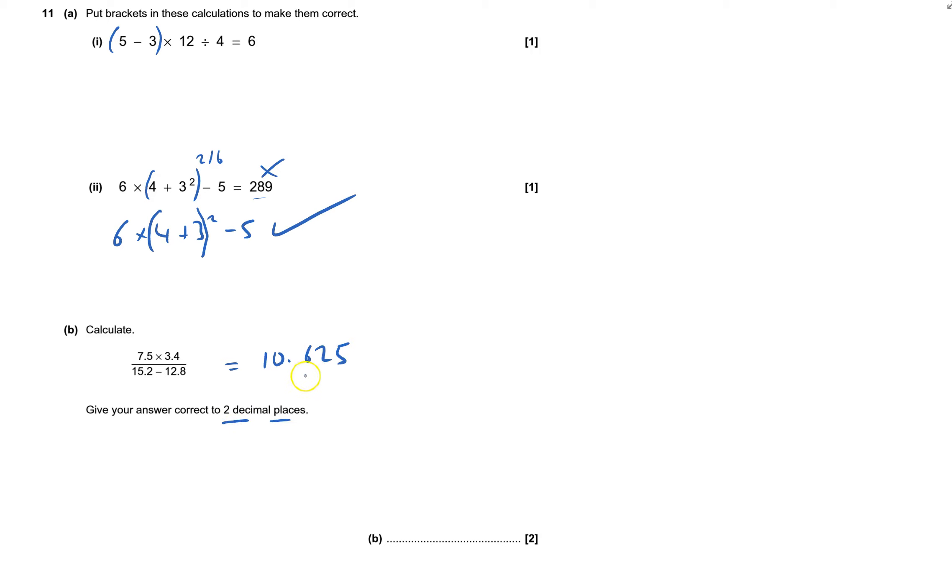Give it to two decimal places. That means I need two numbers after decimal point. The next number is a 5, so I'll have to round it up. So that would be 10.63 to two decimal places. And that's 11 done. And just drag it down. You can see.